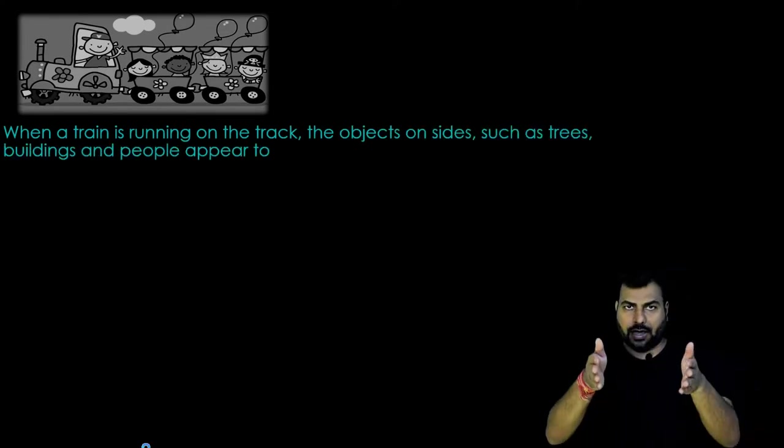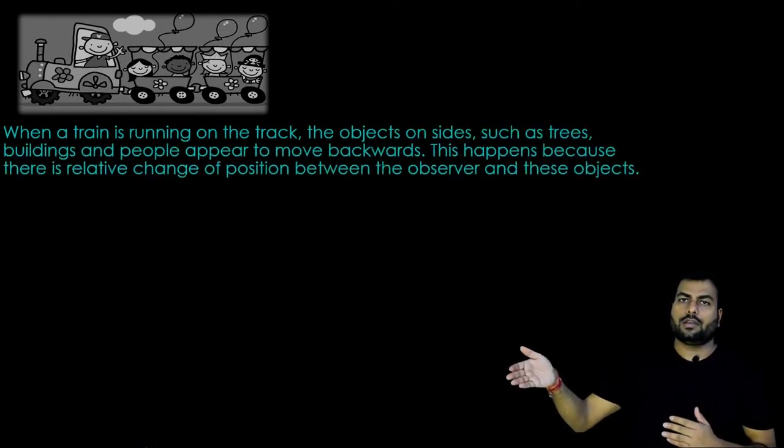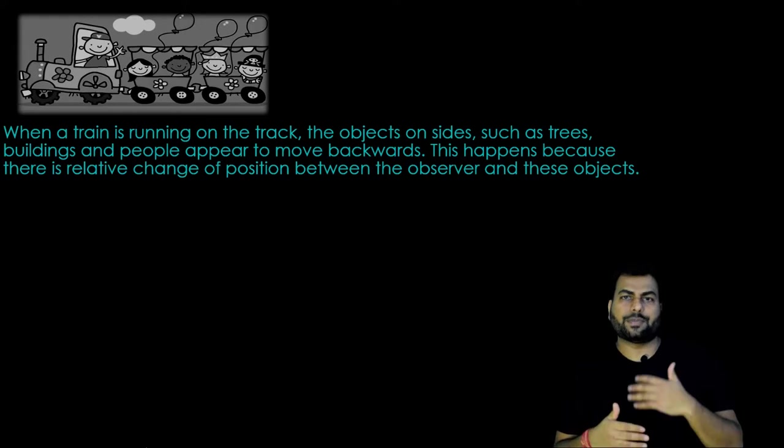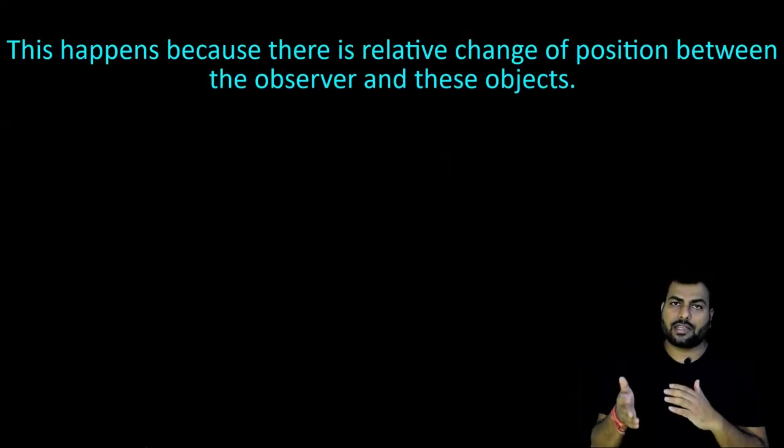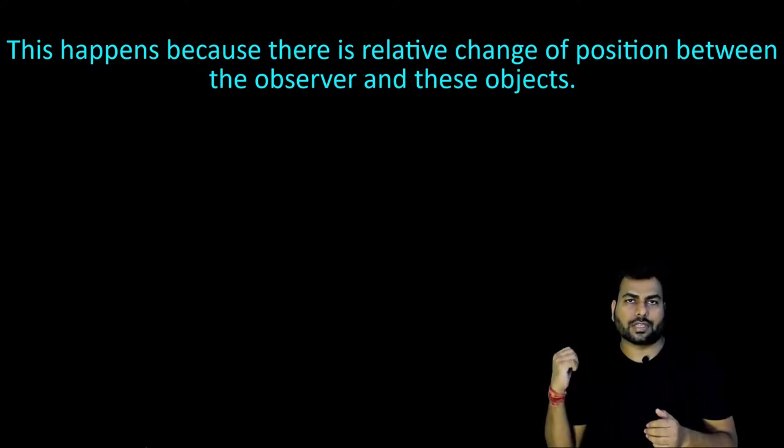When a train is running on the track, the objects outside, such as trees, buildings, people appear to move backwards. This happens because there is relative change of the position between the observer and the objects.